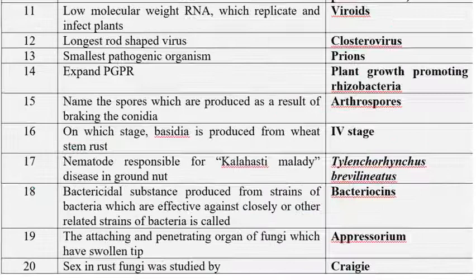Low molecular weight RNA that replicates and infects plants — that is a viroid. A virus consists of either DNA or RNA. For viroids, 40 have been discovered so far, and all their genomes are made up of single-stranded RNA only. The viroid genome is made up of naked single-stranded RNA and does not contain any protein coat.